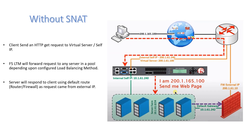The server will try to respond to the client, but the problem is that the server has no route to reach 200.1.165.100. So the server forwards the traffic toward its default gateway, which is the firewall. The firewall will either block the traffic because 200.1.165.100 is an untrusted IP from the LAN side, or forward the response to the internet — where the client receives a response from a different IP address and discards the packet. In both cases, the client cannot reach the website.